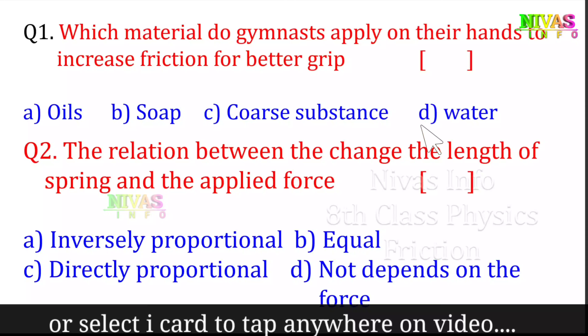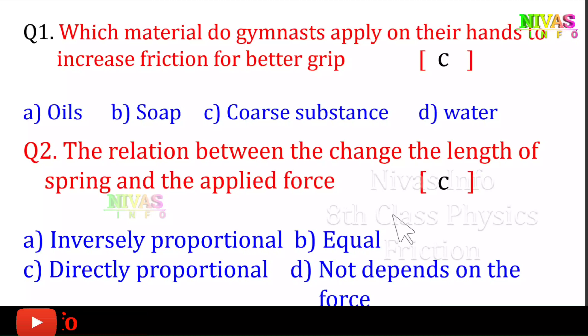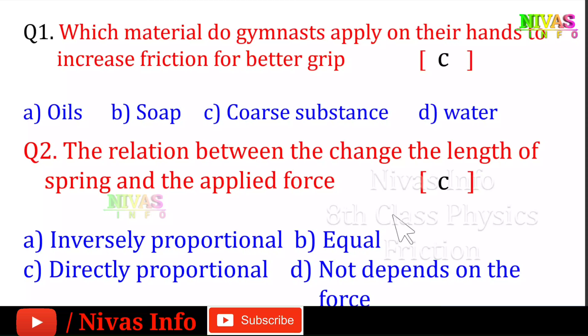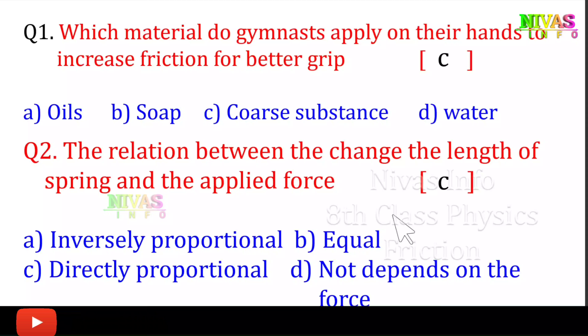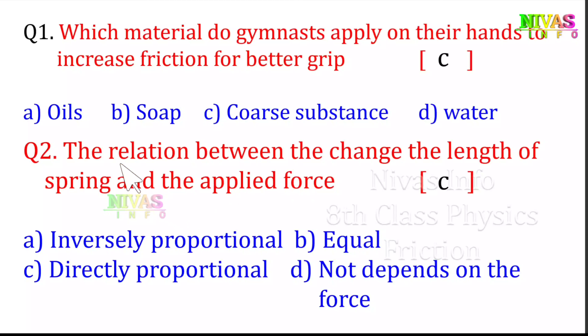Gymnastics is dangerous, so they need a good grip. If we choose oil, it decreases friction rather than increasing it. Coarse substance, based on its material property, increases friction. So gymnasts use a coarse substance on their hands to increase grip and friction.